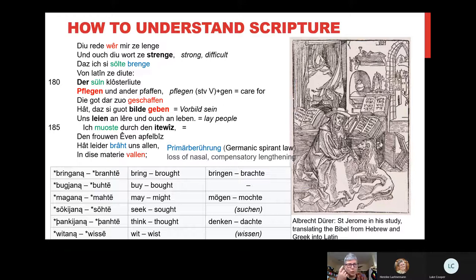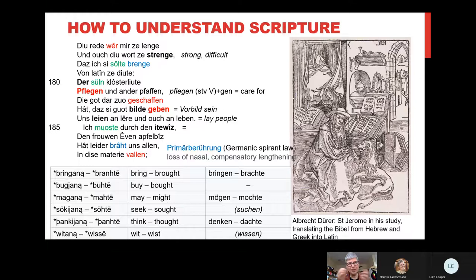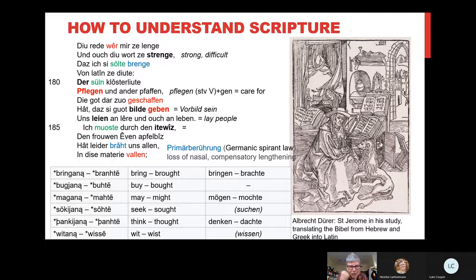The narrator says: 'du redde wer mir zu länge' — namely to explain everything of the Genesis story in theological terms — 'und auch du wort zu strenge, dass ich sie sollte bringe von Latin zu düte.' Translation is literally the bringing across from one language, Latin, into the other, Deutsch. As we discussed, 'düte' means both the vernacular and the interpretation. This translation exercise should be done by Klosterlüte — those who live in monasteries and have time to ruminate on scripture, not teach schoolchildren.